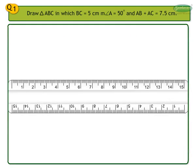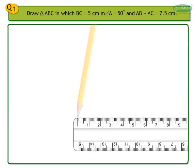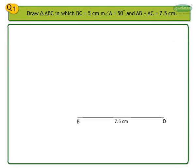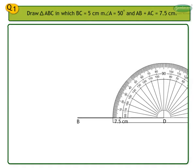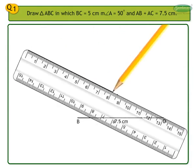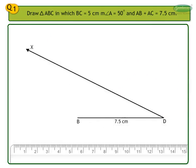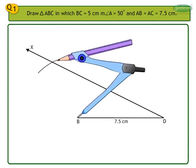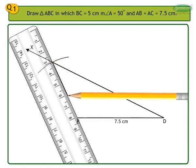Let us see the steps of construction. First, draw segment BD as the base of length 7.5 cm, as AB plus AC is equal to 7.5 cm. Then take the measure of angle D as half of the given measure of angle A. Since measure angle A is equal to 50 degrees, measure angle D is equal to 25 degrees. Take D as center and with 25 degrees measure, draw a ray DX. Now take B as center and draw an arc of length 5 cm, intersecting ray DX at point C. Join B and C.